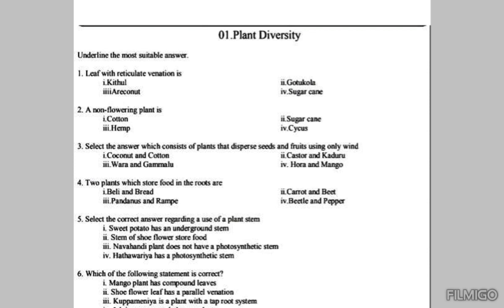Here they have given cotton, sugar cane, hemp, and cycads. Cotton, sugar cane, and hemp are all flowering plants. Therefore, the answer should be the fourth one, which is cycads.